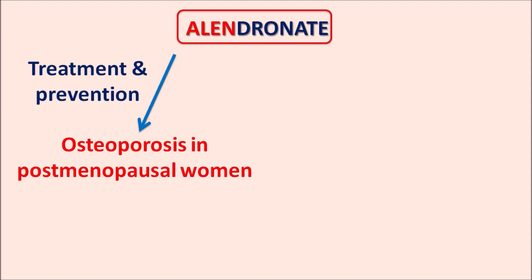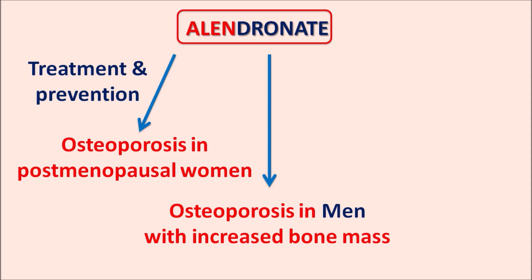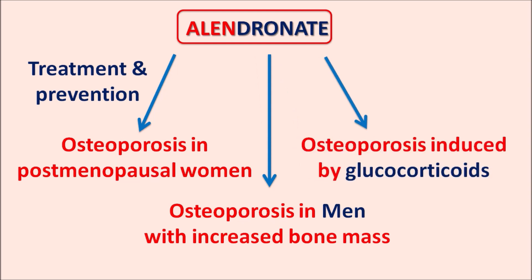Alendronate can also be prescribed in men with osteoporosis. In such situations, increased bone resorption raises the risk of fractures, which is prevented by alendronate. Similarly, drugs like glucocorticoids can reduce bone density and produce osteoporosis due to increased bone resorption, so alendronate can be used in glucocorticoid-induced osteoporosis. This drug can also be used in Paget's disease, a disorder of bone remodeling where normal bone is replaced by old bone, resulting in decreased bone strength and increased fracture risk.